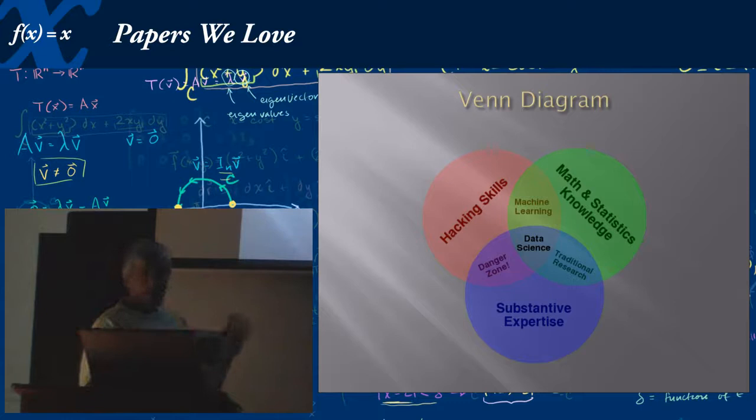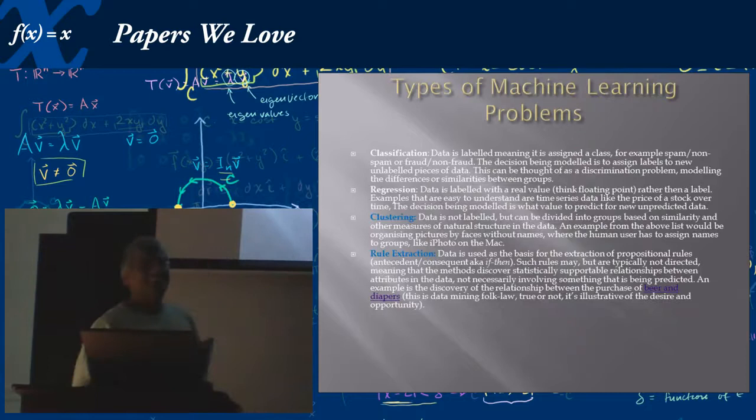So now, to further define machine learning, I think this Venn diagram is very useful because it throws in hacking skills, which explains why it's being discussed. It's the intersection of hacking skills, math and statistics knowledge, and substantive expertise. Now, I'd like to draw your attention to the fact that machine learning is actually outside the body of substantive expertise. I can live up to that. I am outside the body of substantive expertise. That was supposed to be a joke.